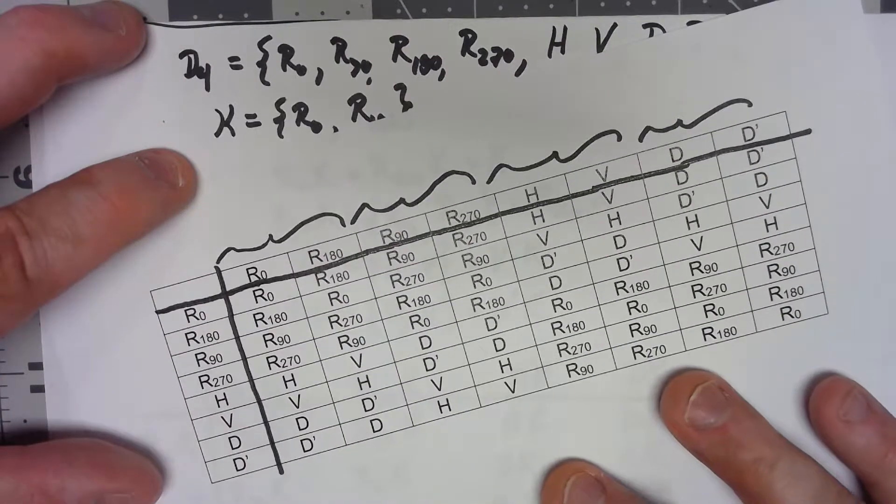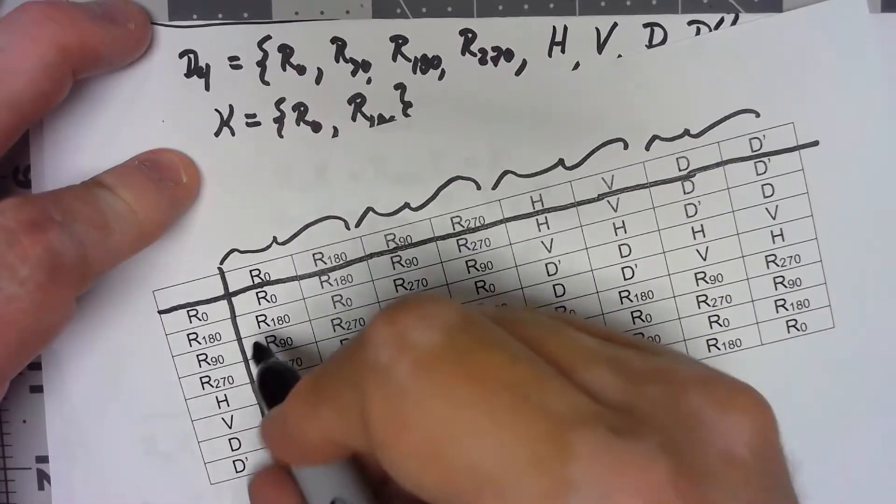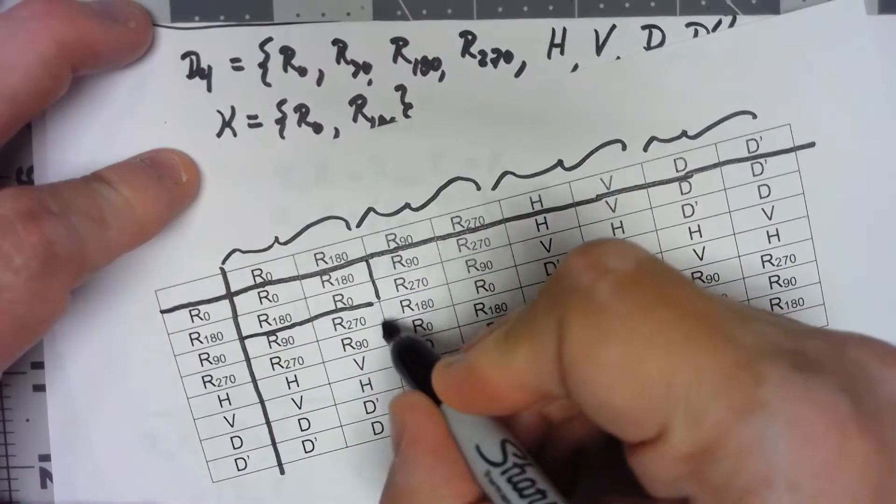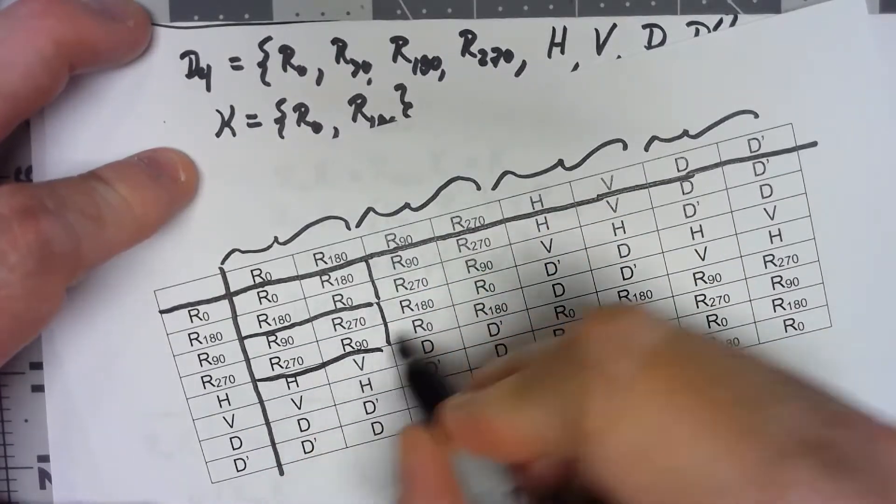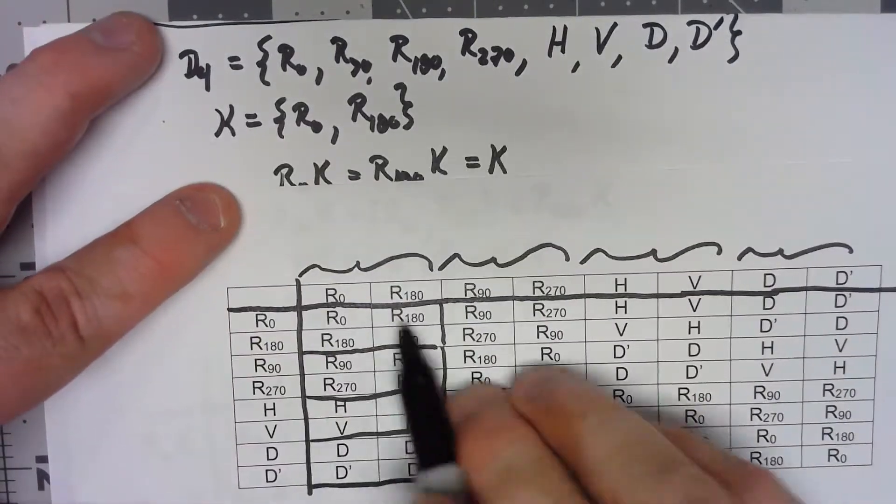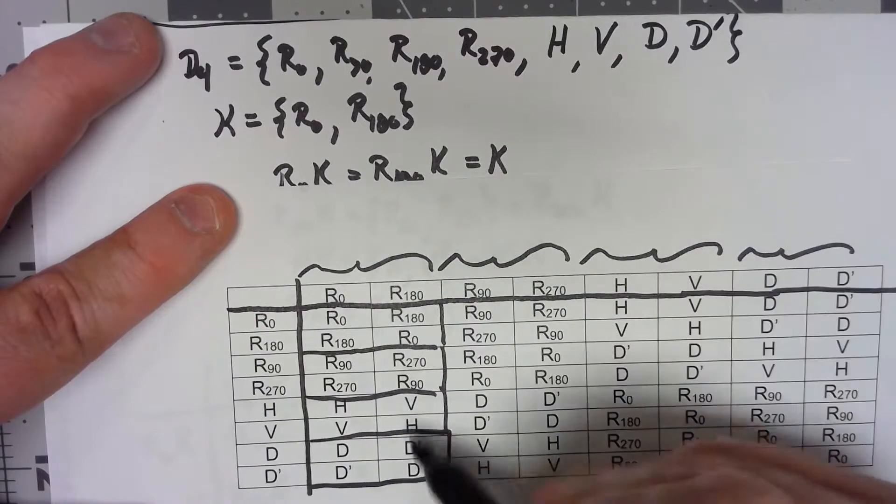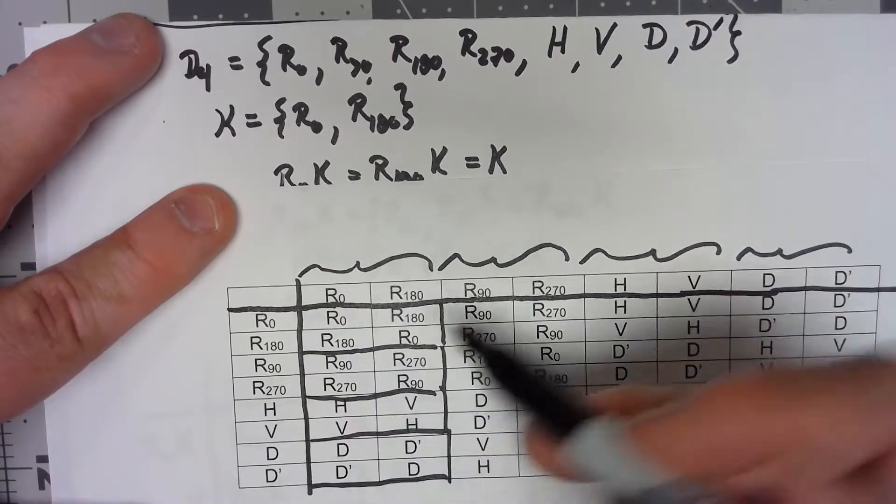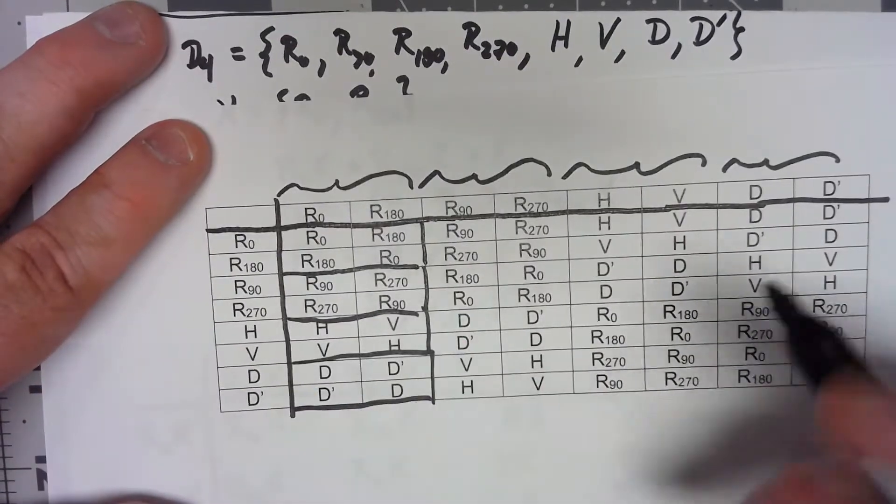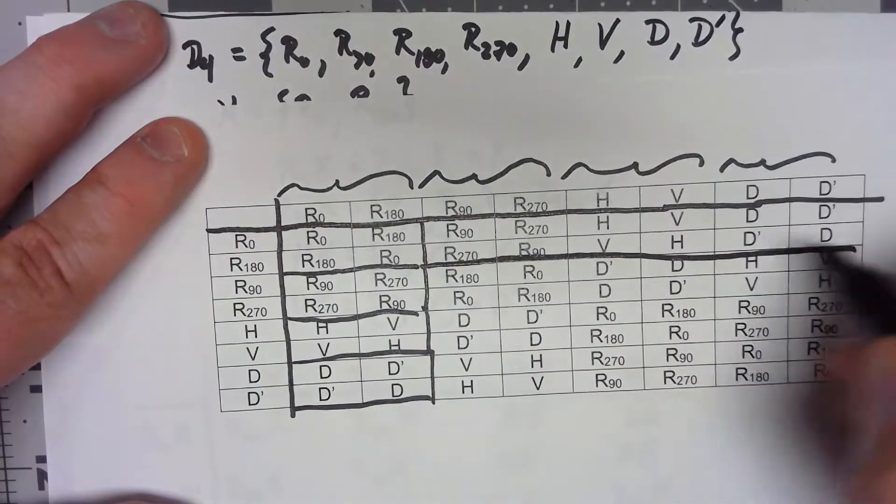What this does is that if we notice that when we put this multiplication together, it kind of breaks up into two by two blocks. In that two by two block there are two copies of R0, two copies of R180. This one has two copies of R90, two copies of R270, two copies of H, two copies of V. And we can continue that throughout the whole table.